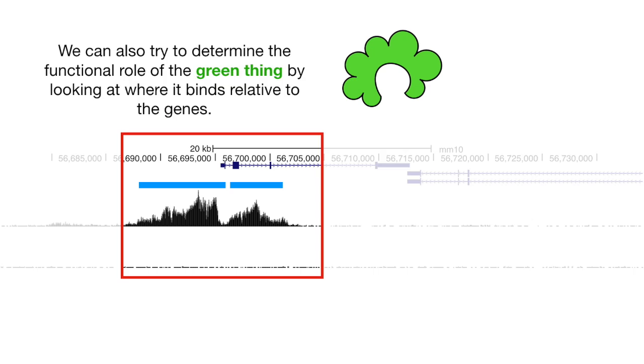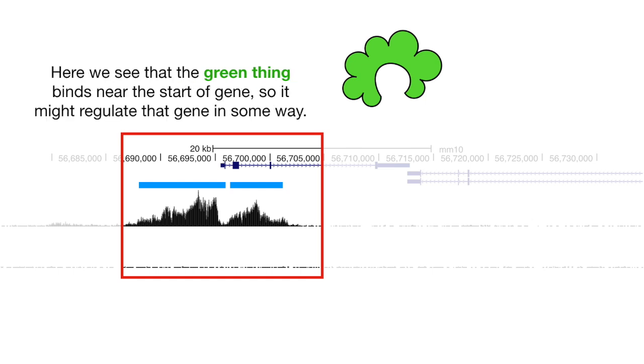We can also try to determine the functional role of the green thing by looking at where it binds relative to the genes. Here we see that the green thing binds near the start of a gene, so it might regulate that gene in some way.